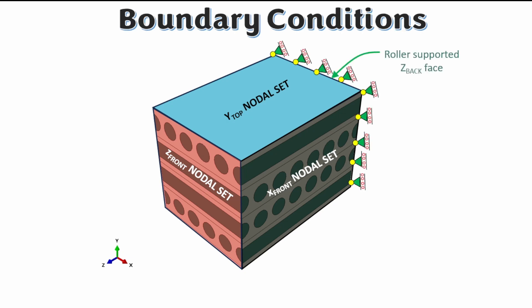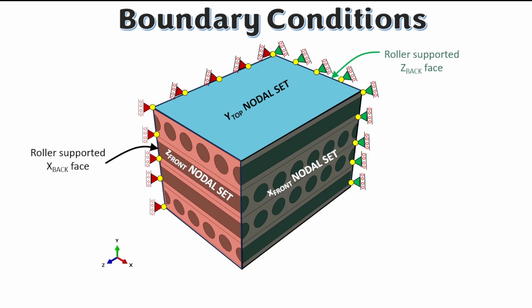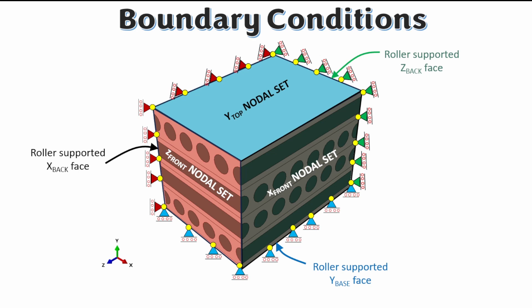There will be a boundary condition that fixes the system in the Z back face direction, shown as a roller support, constrained so that it does not deform in the Z axis. There will also be a roller on the X back face constrained in the X direction, and a Y base roller support constraining the system in the Y direction. The idea is that you're modeling one quadrant of a volumetric system divided into eight parts, and within that quadrant you apply all these boundary conditions.